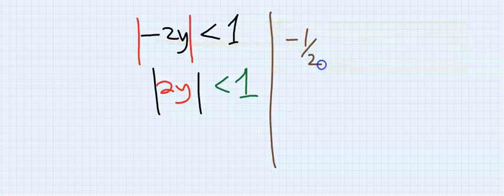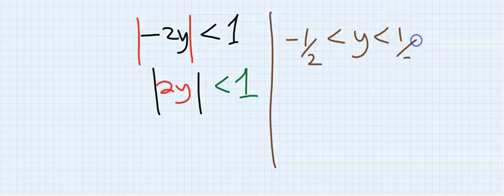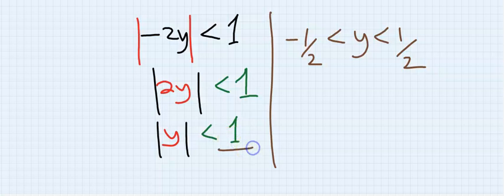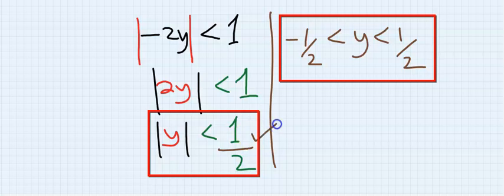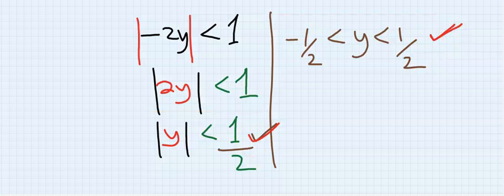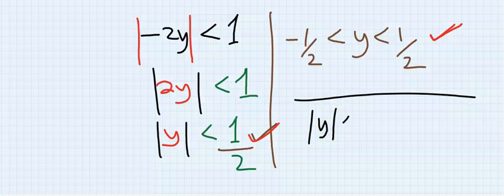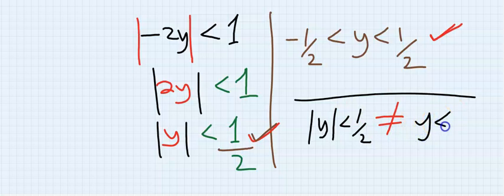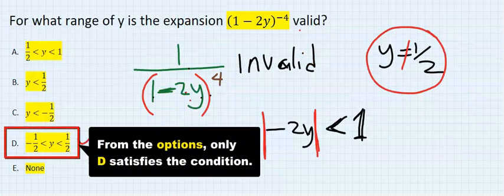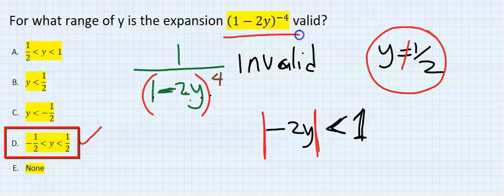Rewriting this inequality: minus one half must be less than y, which must be less than one half. This can also be written as y in the open interval (−1/2, 1/2). Both notations have the same meaning in mathematics. However, the absolute value |y| < 1/2 is not the same as y < 1/2. From our options, this inequality is the only condition that makes this expansion valid, so our answer is D.